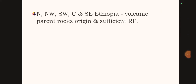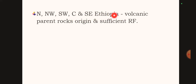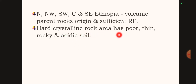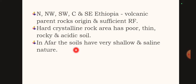In the Ethiopian context, Northern, Northwestern, Southwestern, Central, and South Eastern Ethiopia have volcanic parent rocks and sufficient rainfall. These regions include areas such as Amhara, Tigray, Gambella, Jemma, and the South Eastern Highlands and Lowlands. Some soils in these areas have very shallow and saline natures.